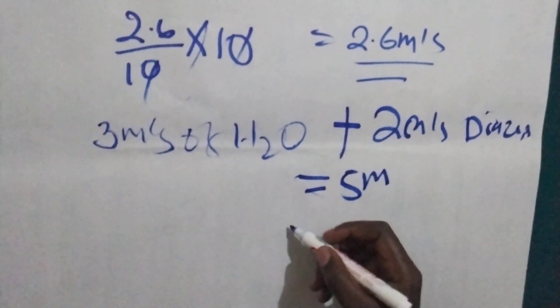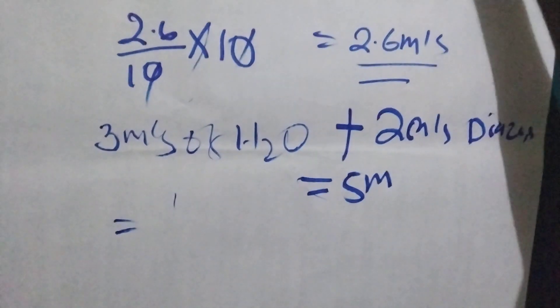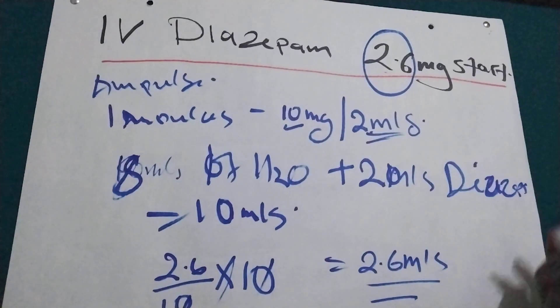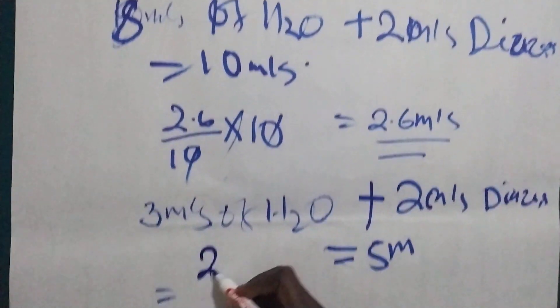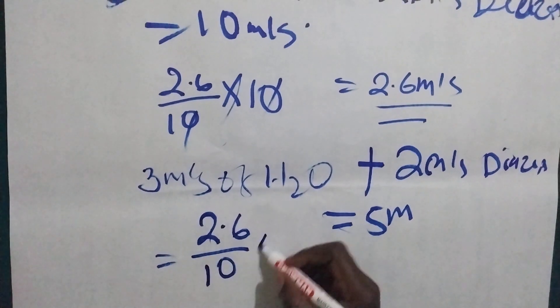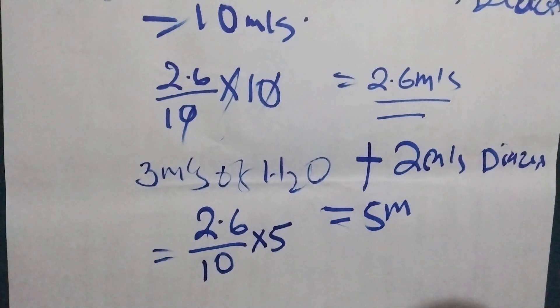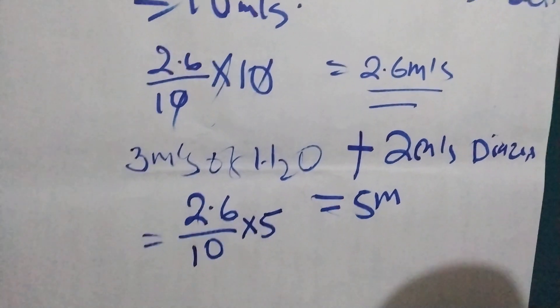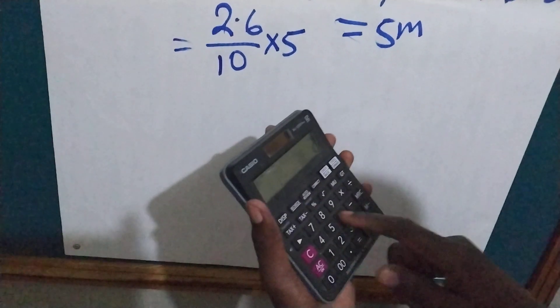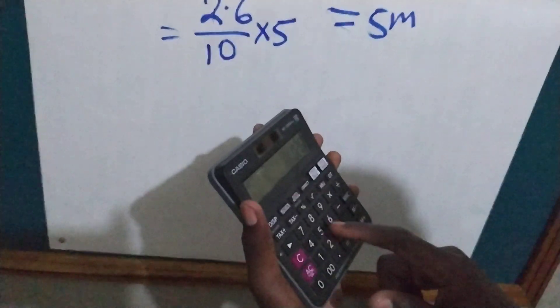So let's calculate like that. Let me use the same prescription. This one will be low for the child. 2.6 divided by 10 times 5. This one needs to calculate. So this one is 2.6 divided by 10 times 5.